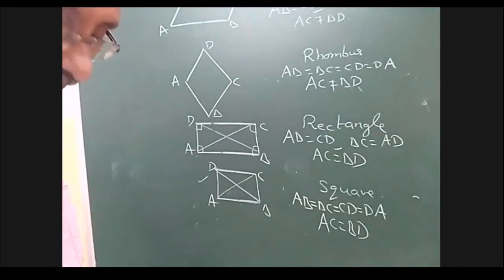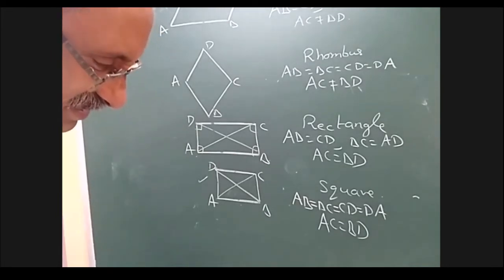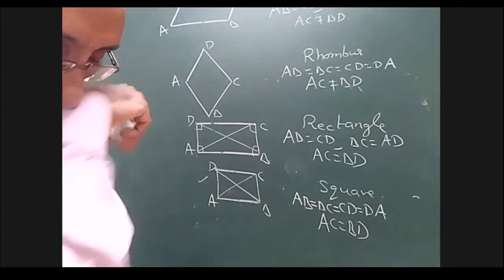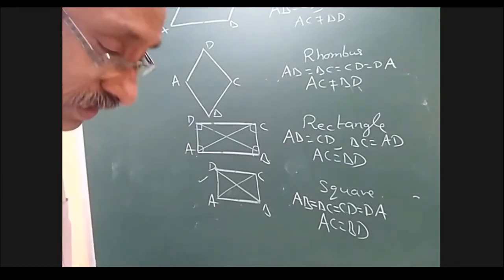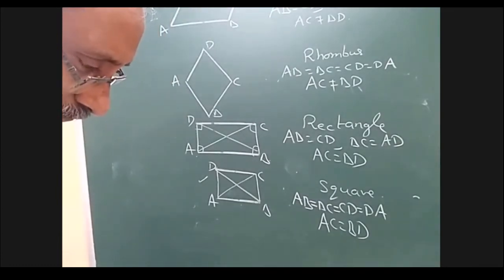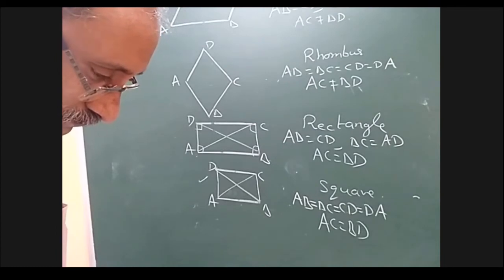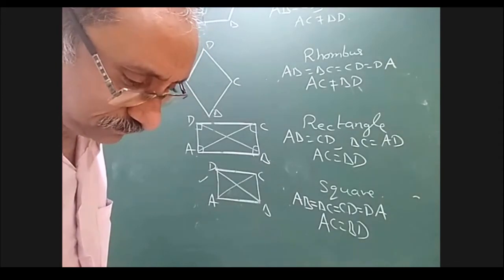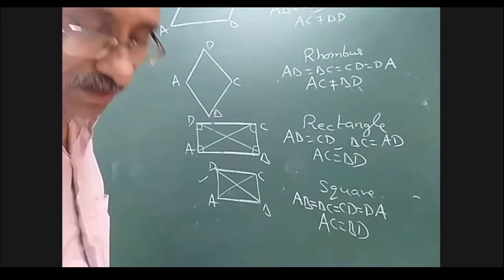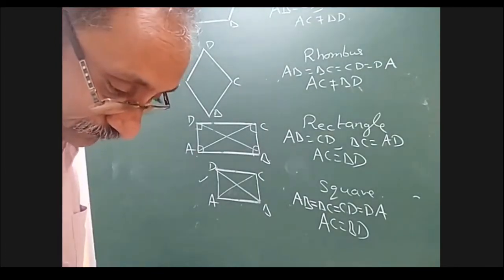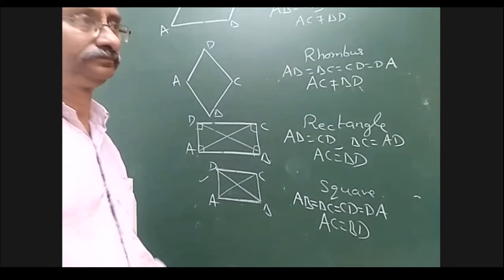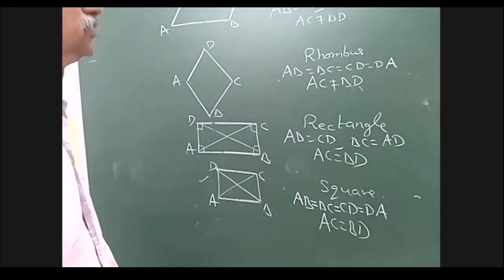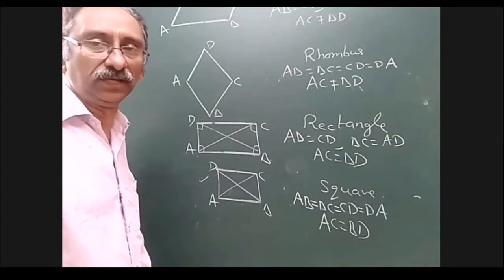If opposite sides are parallel, then they are automatically equal also. But to find the length, it is not sufficient just to say parallel — that is why we say parallel and equal.